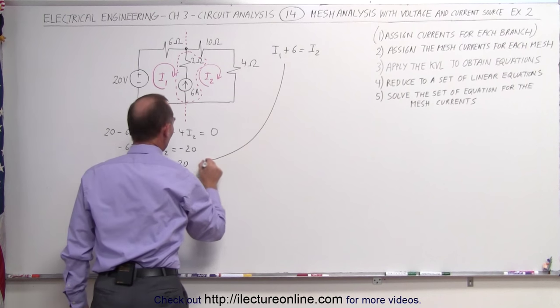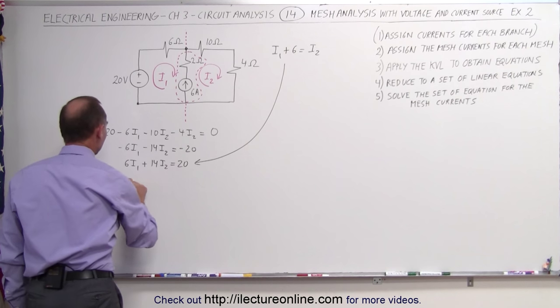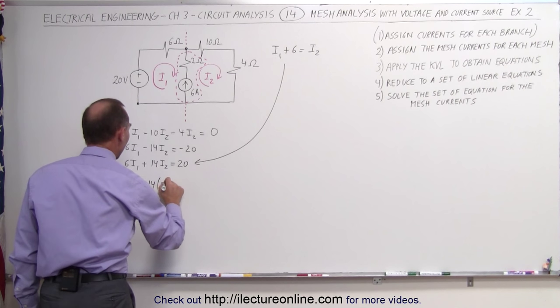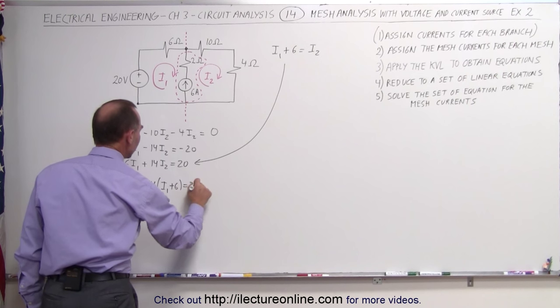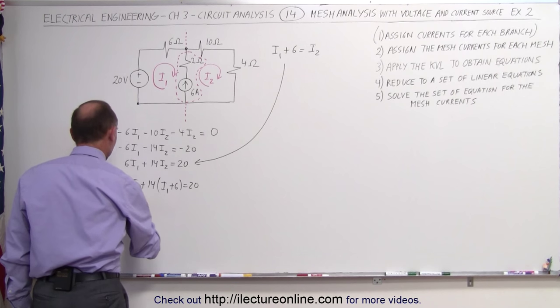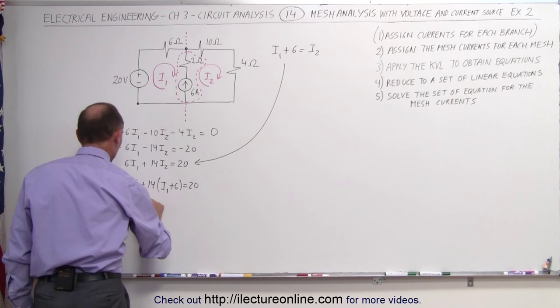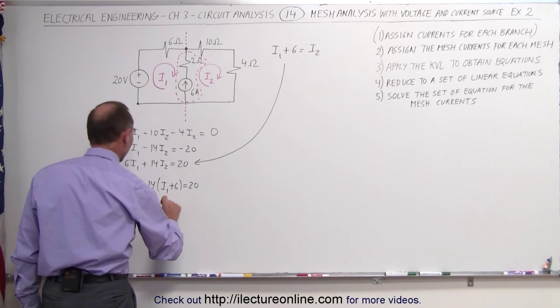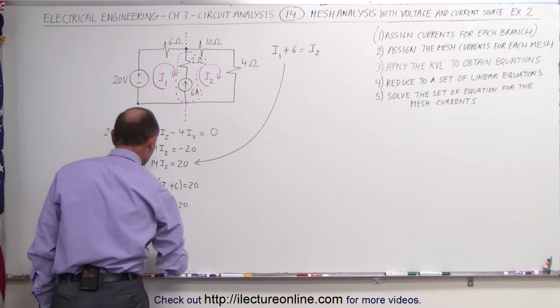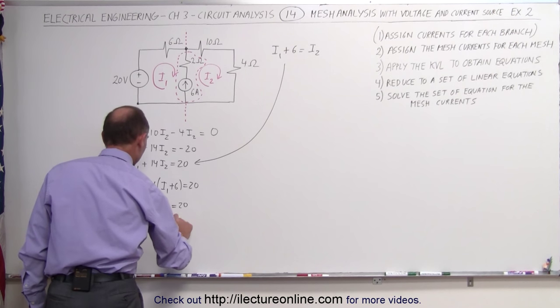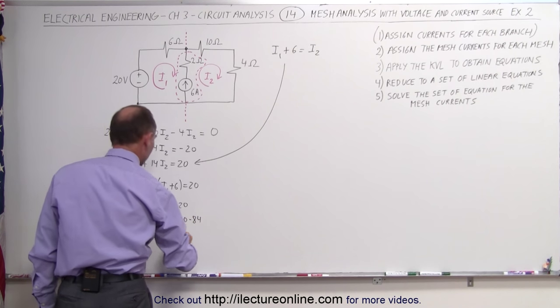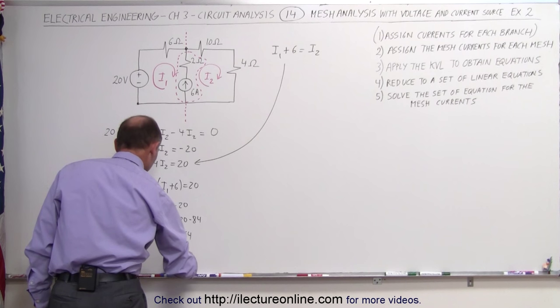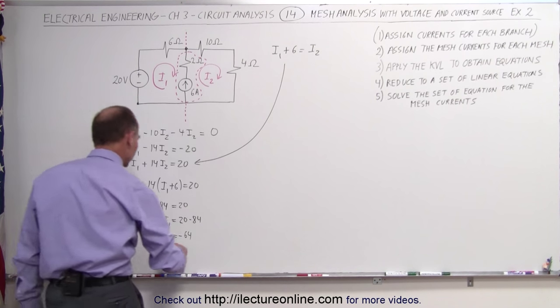I can take that and plug that into this equation, which then means that 6 times I1 plus 14 times I2, which is I1 plus 6, equals 20. Combining these, I get 6 I1 plus 14 I1, which is 20 I1, plus 6 times 14, that would be 84, equals 20, which means that 20 I1 equals 20 minus 84. 20 I1 equals minus 64. I1 equals minus 3.2 amps.